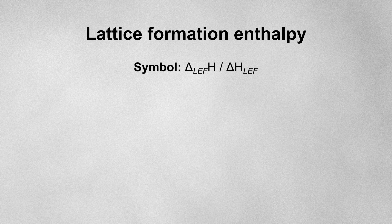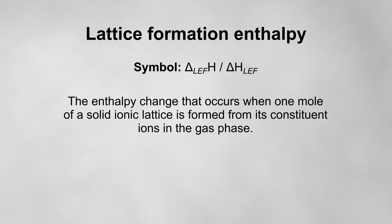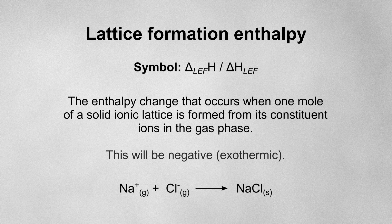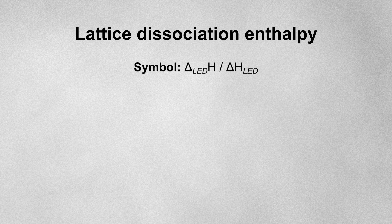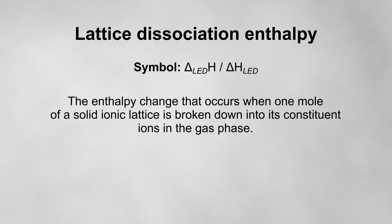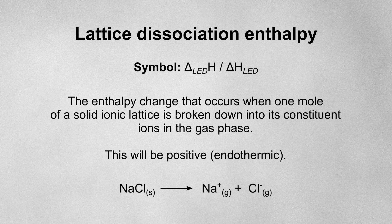The lattice formation enthalpy is the enthalpy change that occurs when one mole of a solid ionic lattice is formed from its constituent ions in the gas phase. For example, this equation shows the lattice formation enthalpy for sodium chloride. It will always be negative because it involves the formation of ionic bonds, so it's exothermic. The opposite is the lattice dissociation enthalpy, which is the enthalpy change when one mole of a solid ionic lattice is broken down into its constituent ions in the gas phase. It will always be positive because it involves breaking ionic bonds, so it's endothermic.